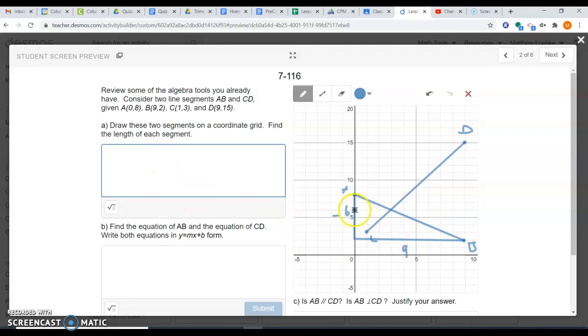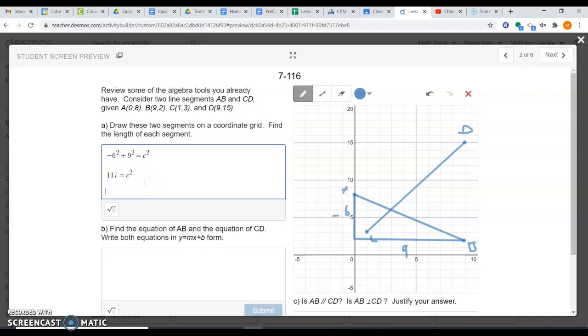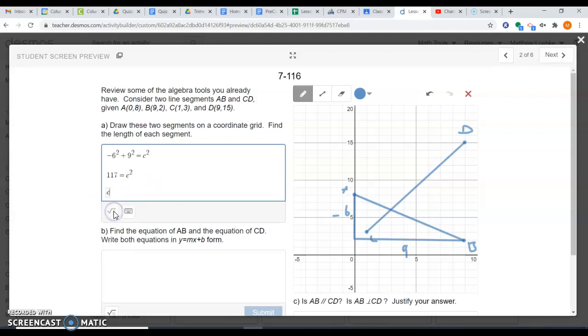Now I can use the Pythagorean theorem to find the length of AB. Because I have two legs of a right triangle, I can find the hypotenuse using A squared plus B squared equals C squared. Since negative six and nine are legs, we write negative six squared plus nine squared equals C squared. Here we get 117 equals C squared, which ultimately then C would equal 10.82 when you round it.